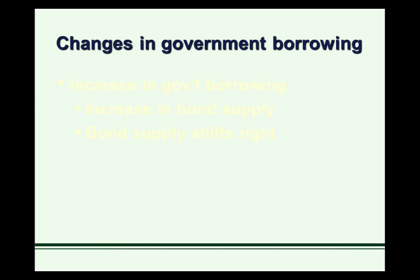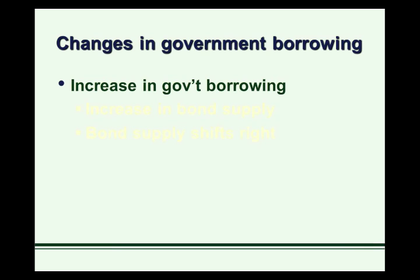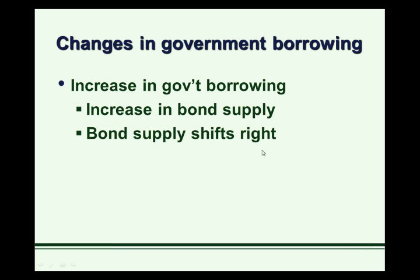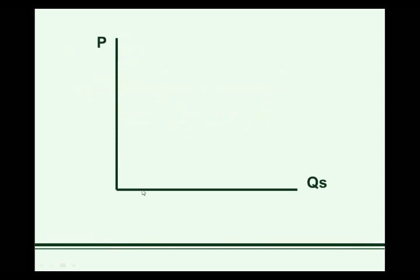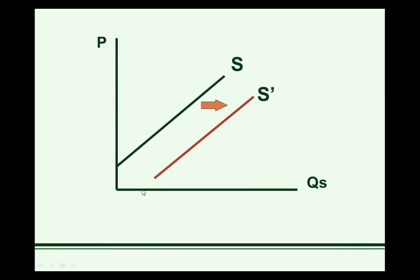One of these outside factors is changes in government borrowing. If there's an increase in government borrowing, the government comes into the bond market as a borrower — and a very large borrower, a large customer. We're going to see the bond supply curve increase, and in our model a supply increase is a shift to the right. So bond supply would shift right as the government increases its borrowing. At each and every price, you can see that there's a larger quantity supplied of bonds.